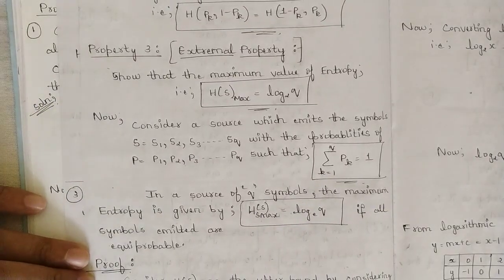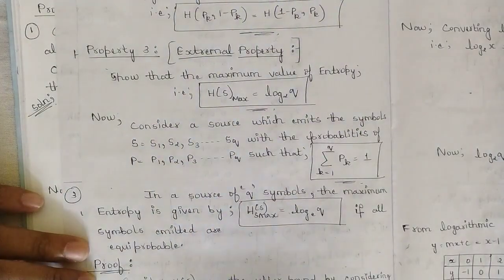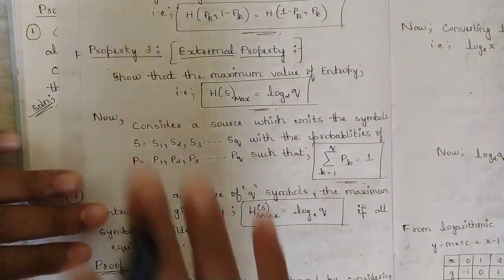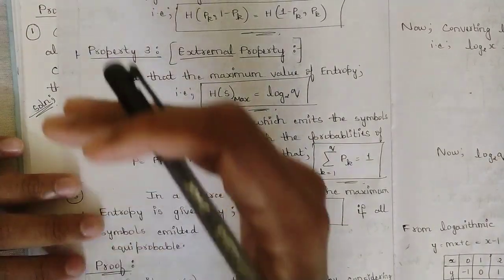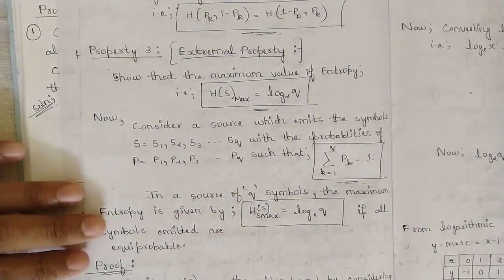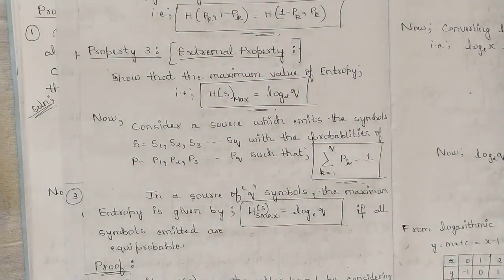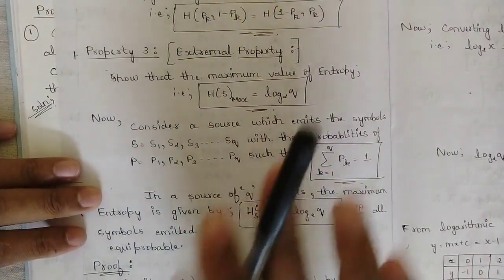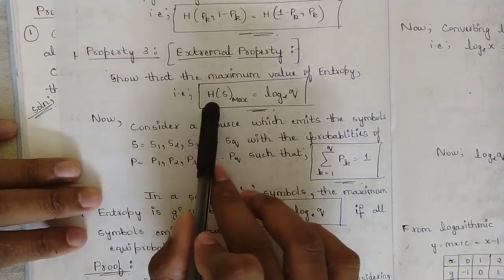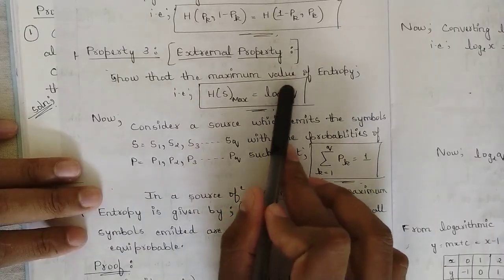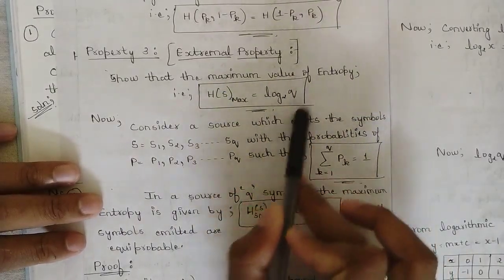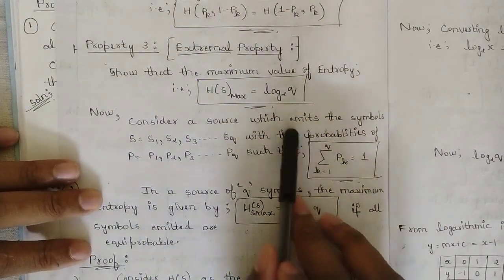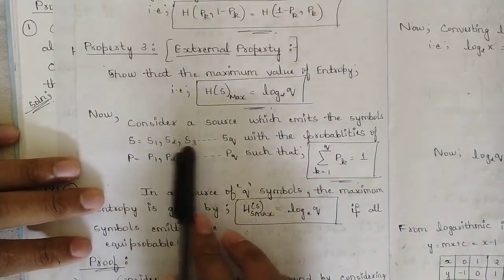Property three is a very important property called the extremal property. Here we are mainly focusing on the maximum entropy value. This property is important because they might ask it separately — for example, 'explain the extremal property in terms of entropy.' There is a bit of derivation here. We need to show that the maximum value of entropy, H of S max, is equal to log base 2 of Q, where Q is the number of symbols generated.